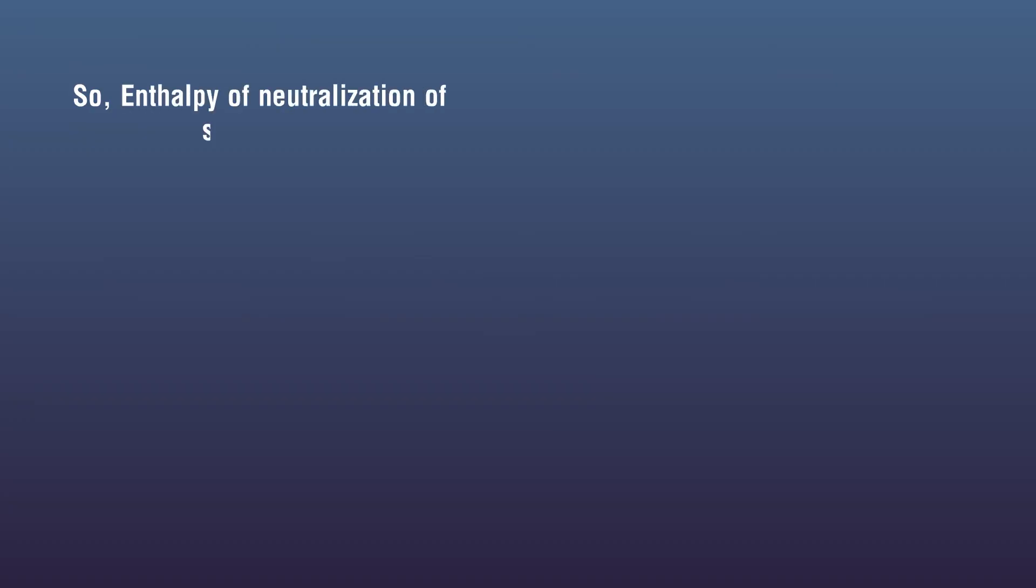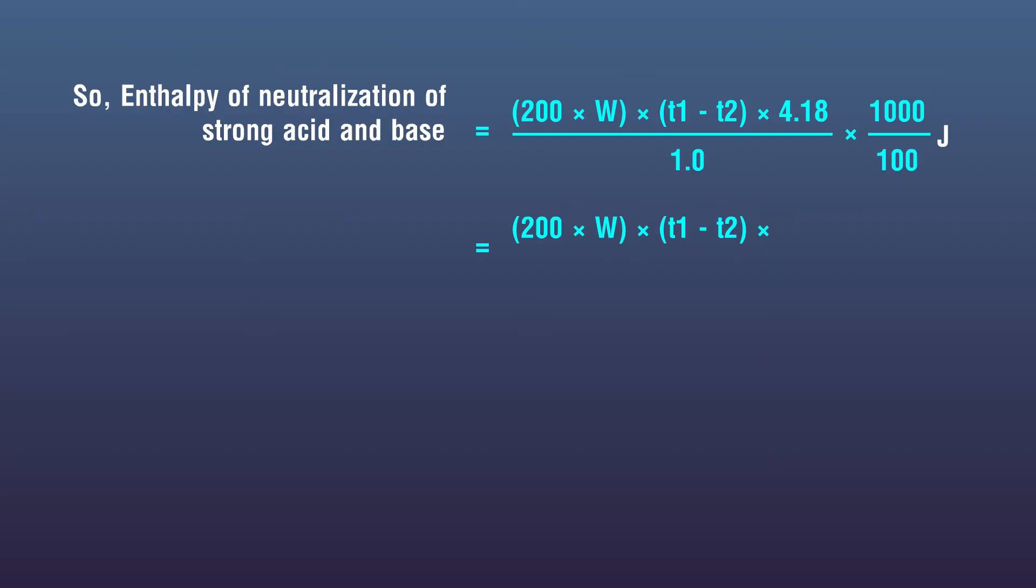So, enthalpy of neutralization of strong acid and base is equal to 200 multiplied by W multiplied by T1 minus T2, multiplied by 4.18, divided by 1.0 multiplied by 1000 divided by 100 joules. Is equal to 200 multiplied by W multiplied by T1 minus T2, multiplied by 4.18, divided by 1.0 multiplied by 100 kilojoules.